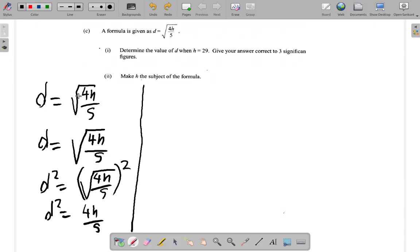What we did: d equals square root of 4h over 5, d squared equals 4h over 5. Now earlier what we did was d squared equals 4h divided by 5, and then we multiply by 5.